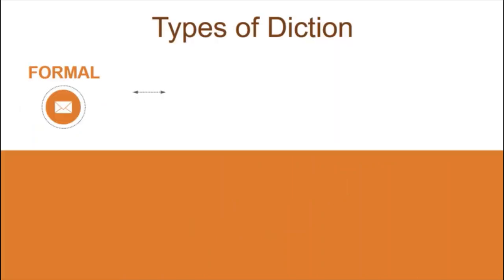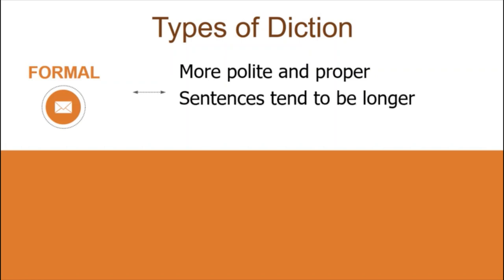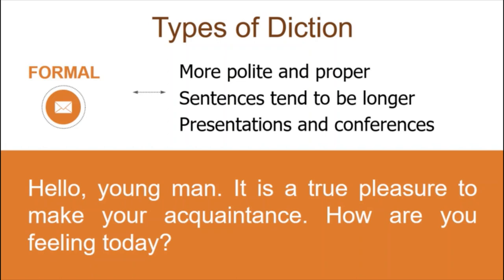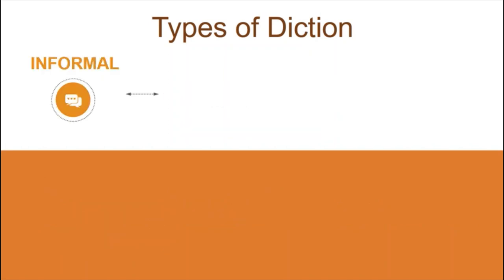First, we have formal diction. Formal diction uses polite and proper words. Formal language is often filled with descriptive words that are quite precise and sentences may be longer. It is often used in formal situations such as press conferences and presentations. For example: 'Hello, young man. It is a true pleasure to make your acquaintance. How are you feeling today?' Just by reading this, you already have a sense that the people talking have just met and are under very formal circumstances because of the speaker's choice of words.